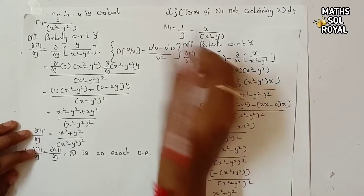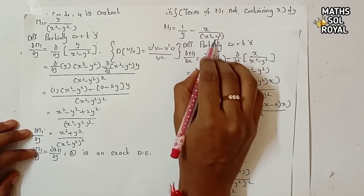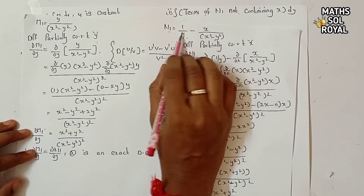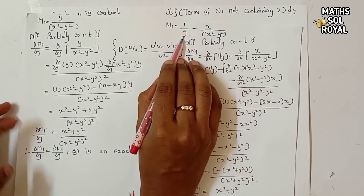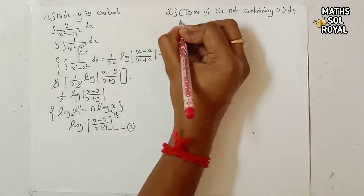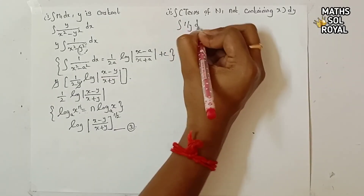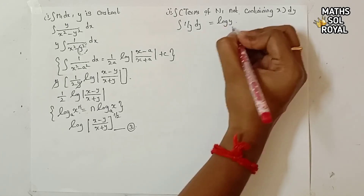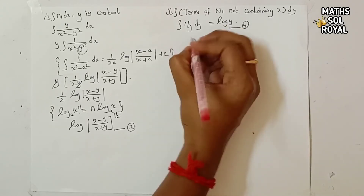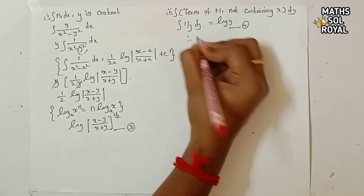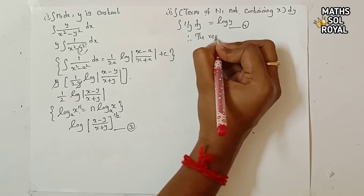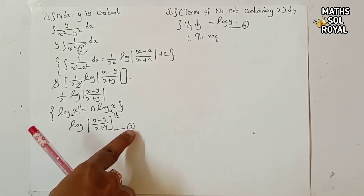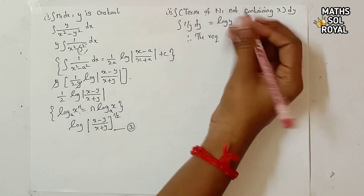For terms of N₁ not containing x: N₁ = 1/y - x/(x² - y²). The term x/(x² - y²) contains x, so we only integrate 1/y. Integral of (1/y) dy = log|y|. This is equation 4.